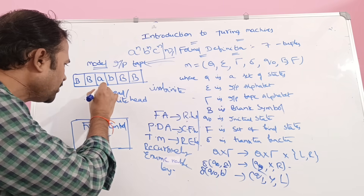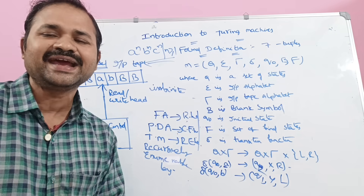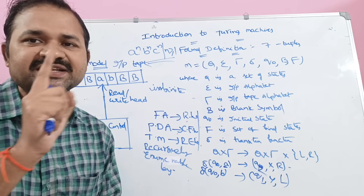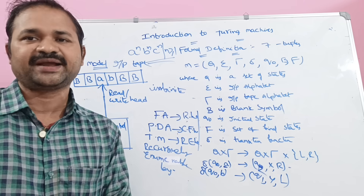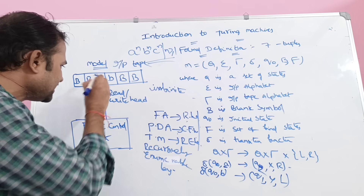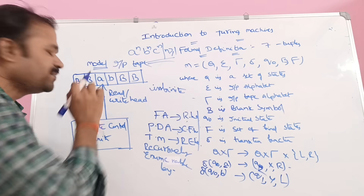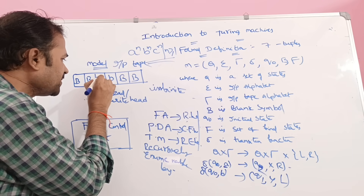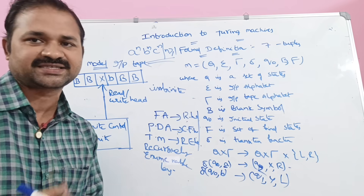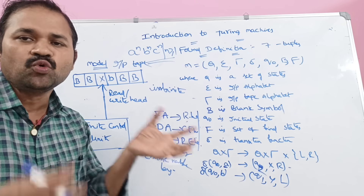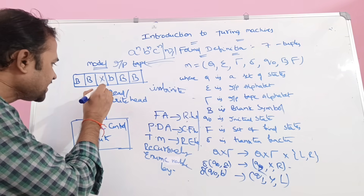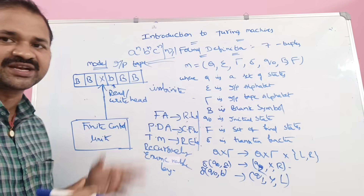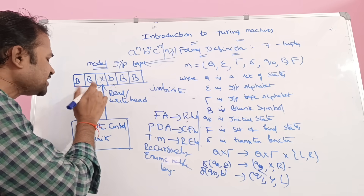The next component is the read/write head. By using the read/write head we can perform a read operation as well as a write operation. At a time we can read only one symbol, or we can perform a write operation. For example, if the read/write head is over symbol A, we can read it or we can modify the content — say, replace A with X. After that, the head can move either to the right or to the left.